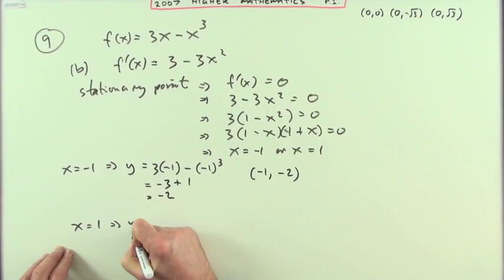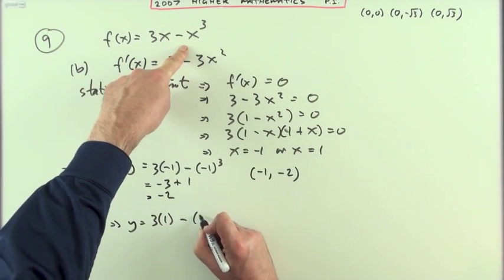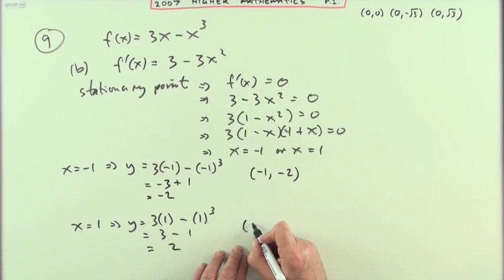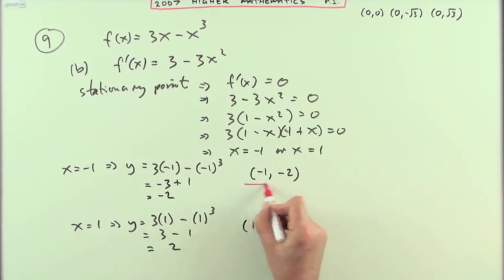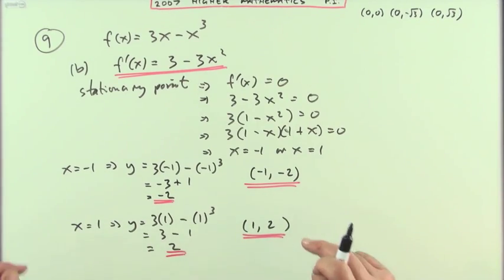If x equals 1, then y will be, popping it into here, 3 times 1 minus 1 cubed. That's simpler this time because it's just 3 take away 1, which is positive 2. So there's the other point. The other stationary points.